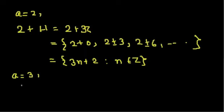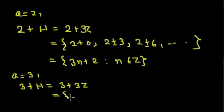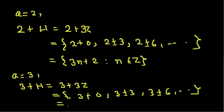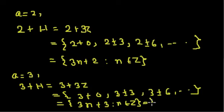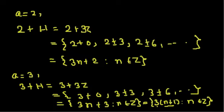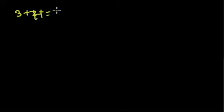Now let A = 3. Then 3+H = 3+3Z gives elements 3+0, 3+(−3), 3+(−6), and so on. These are all of the form 3n+3 = 3(n+1), which is just all multiples of 3. So 3+H is the same as H. Similarly, 4+H equals 1+H, and 5+H equals 2+H.